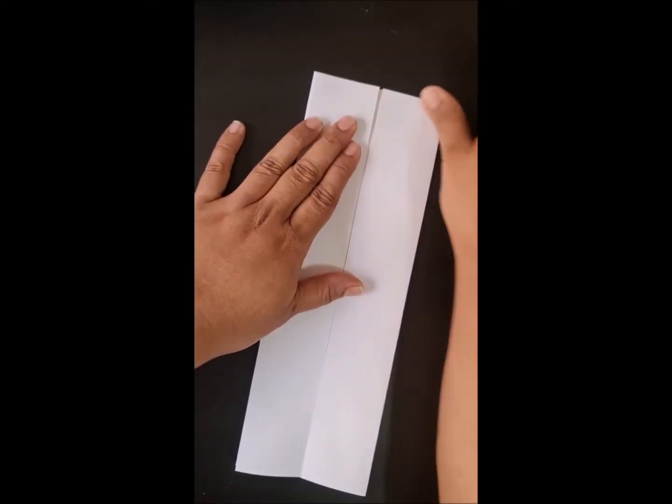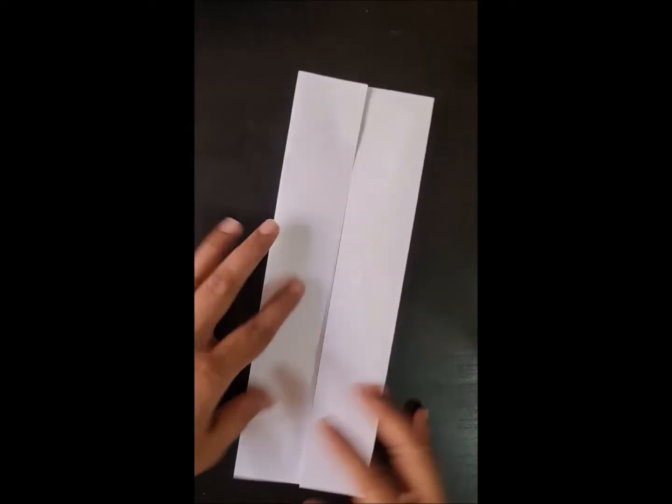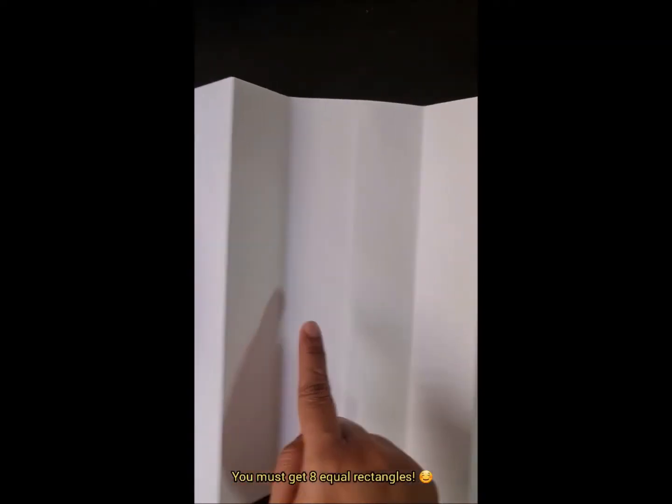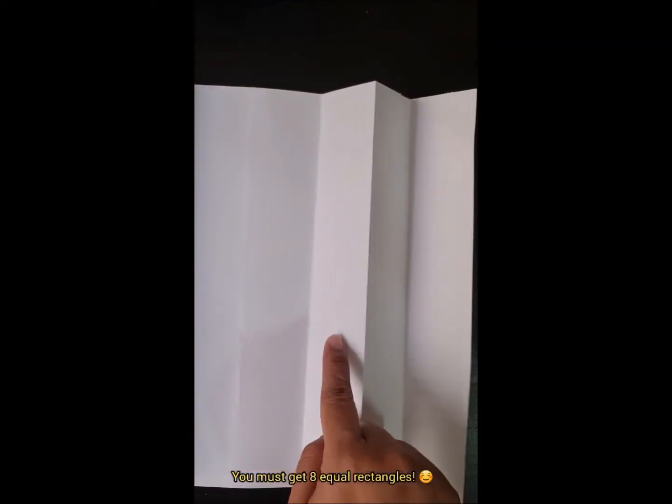Now, after doing this folding, you will notice once you open up your paper, you will have one, two, three, four, five, six, seven, eight - eight vertical lines and rectangles that are the same. Exactly the same.